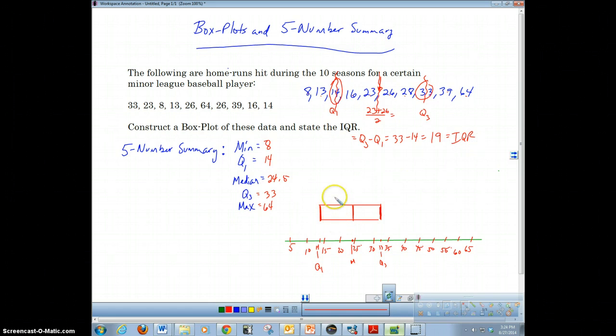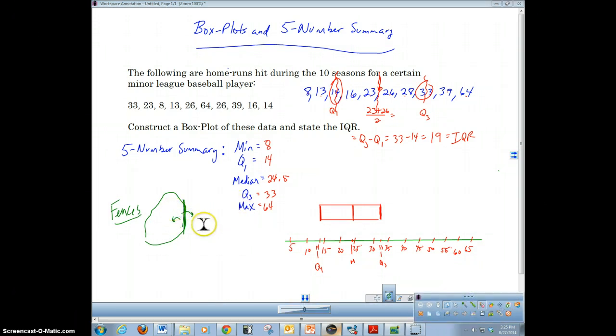To complete this box plot, we need to determine if there are any outliers. So we've got these things called fences, and the fences tell us where the outliers are. You could think of it like we have a yard, and I put a fence in my yard. Anything that's inside the fence is not an outlier. Anything that's over the fence is an outlier. We're going to have an upper fence and a lower fence.